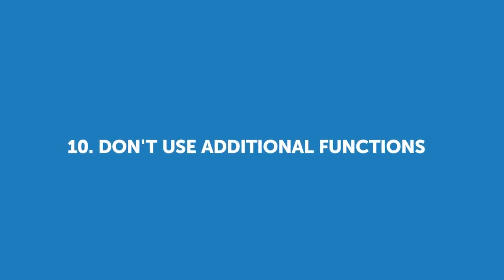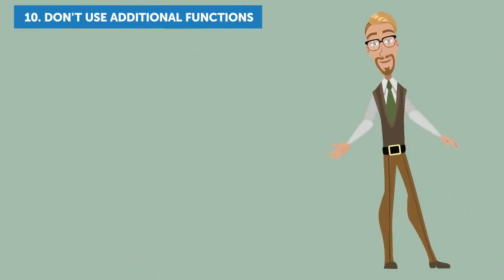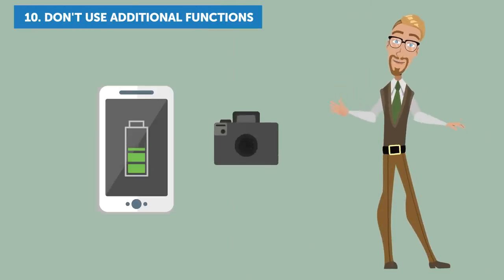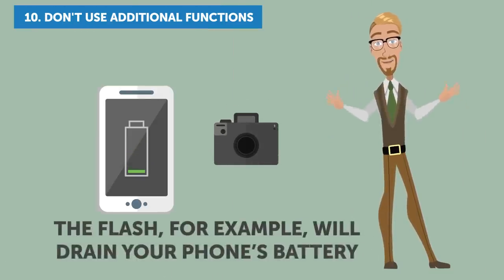10. Don't Use Additional Functions. If your battery is running down, or even if it's not but you just don't have a charger with you, avoid using additional functions like the camera. The flash, for example, will drain your phone's battery life in a flash. Literally.